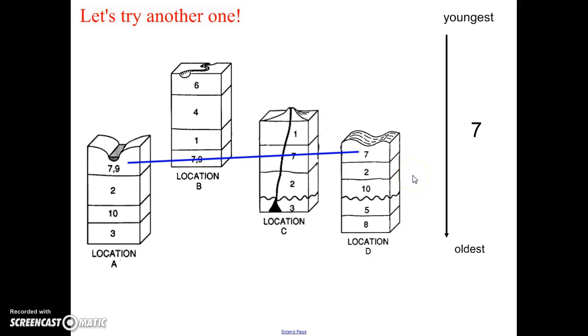Let's do the younger ones. What do we see on top of the seven? Well, over here and over here, I see a one. So the one, because it's on top, the one is going to be younger. So we'll list that one on top. The only other rocks that are younger than the one are what we see in location B. I see a four and I see a six. So the four would have been younger than the one, and the six is the absolute youngest layer that we see here.